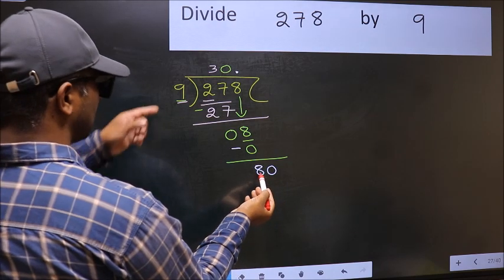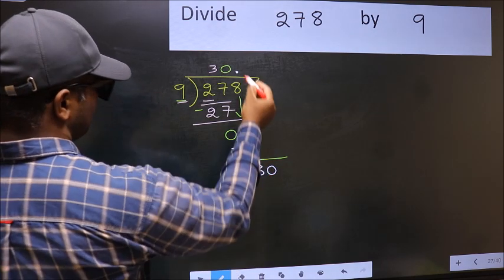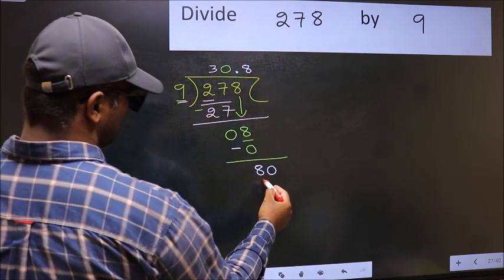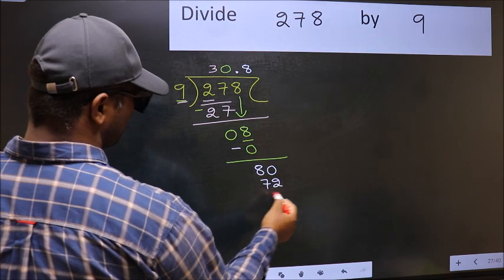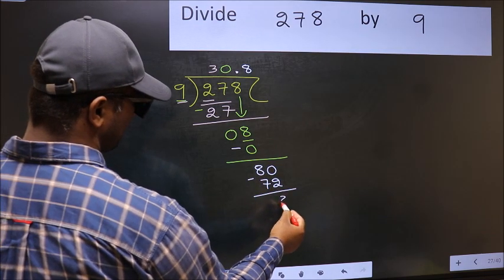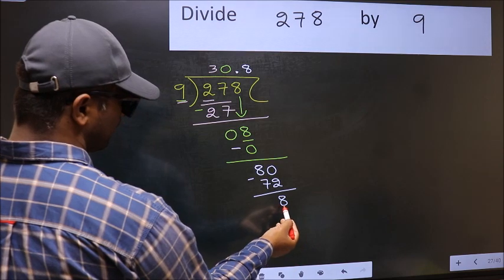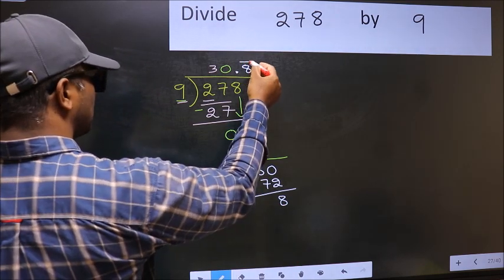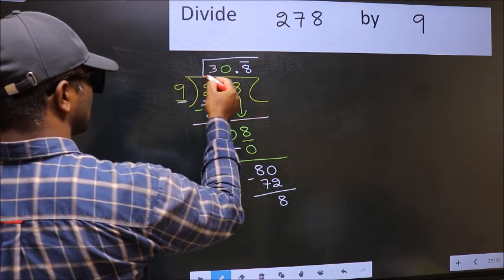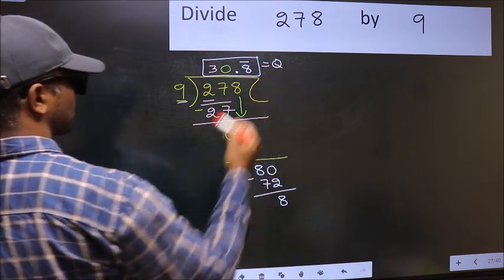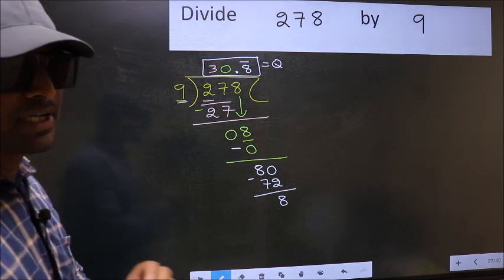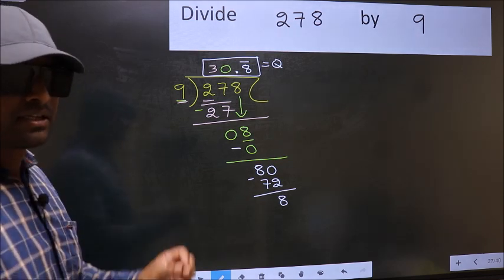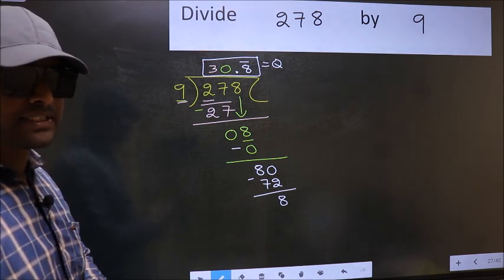A number close to 80 in 9 table is 9 times 8, 72. Now you should subtract. We get 8. We got 8 again. That means we get bar on this number. So this is our quotient. Did you understand where the mistake happens? You should not do that mistake.